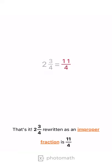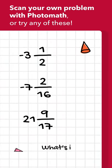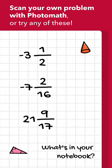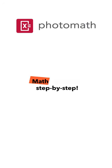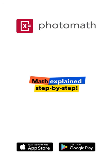That's it! 2 and 3 quarters rewritten as an improper fraction is 11 quarters.